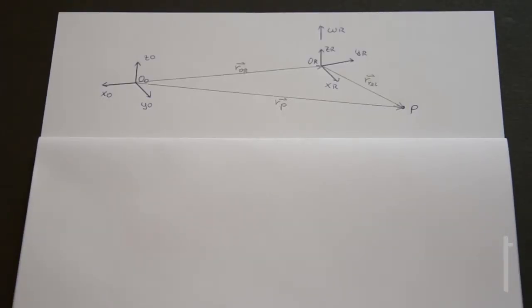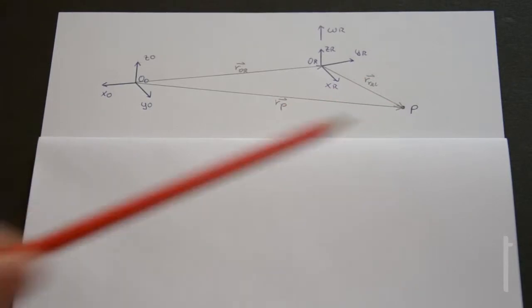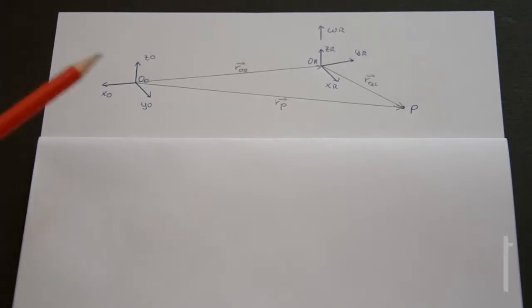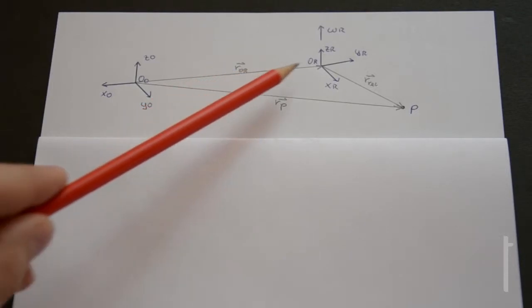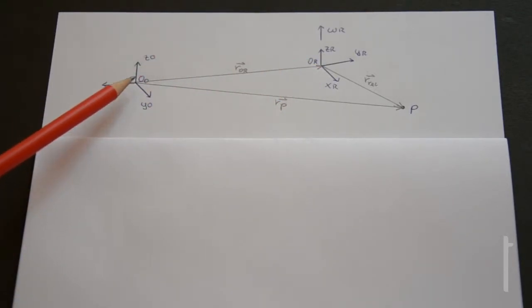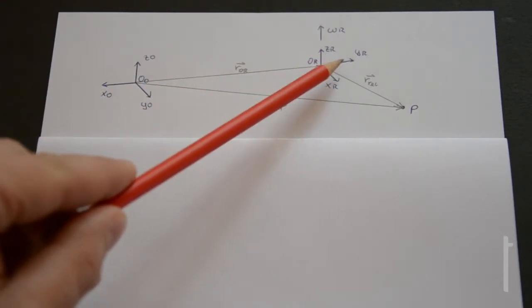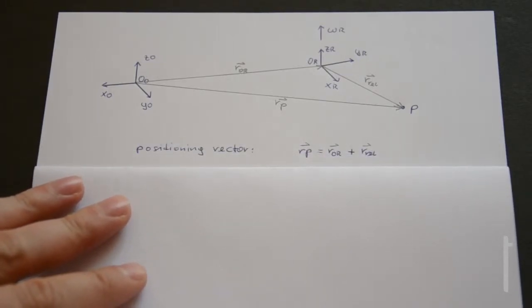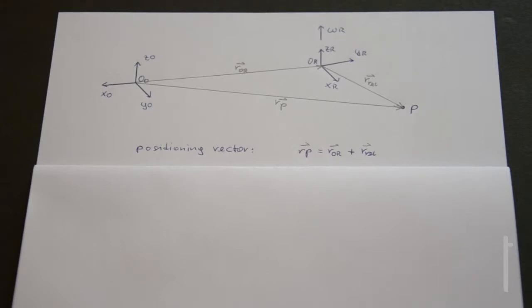Now let's have a look at what comes next. We have our two coordinate systems: the rotating frame of reference and the inertial frame of reference, and here we can see the point P. What we want to know is the velocity of point P with respect to the inertial frame of reference — the absolute velocity of point P. This is nothing else than the derivative of the vector r_P. We can see that r_P consists of two parts: the vector r_0r (from the origin of the inertial frame to the origin of the rotating frame) plus r_relative (from the origin of the rotating frame to point P). So we can write r_P = r_0r + r_relative, and we want to derive this with respect to time and with respect to the inertial frame of reference.